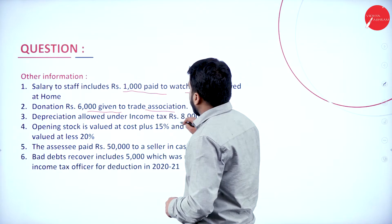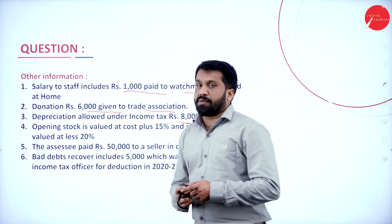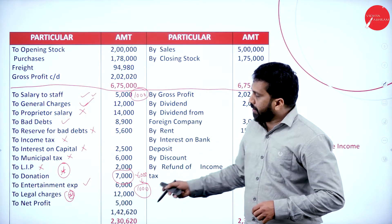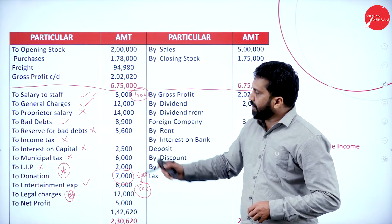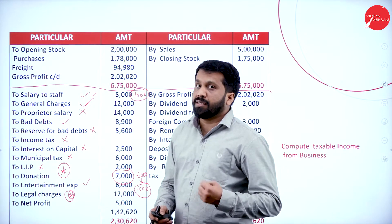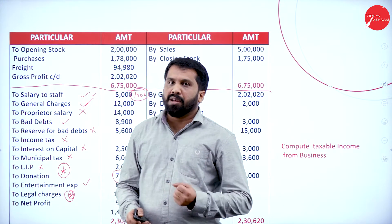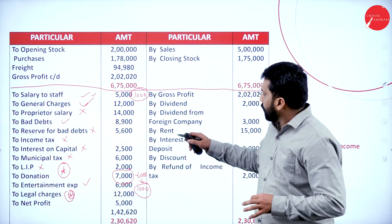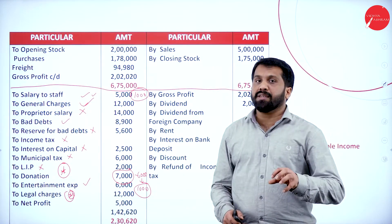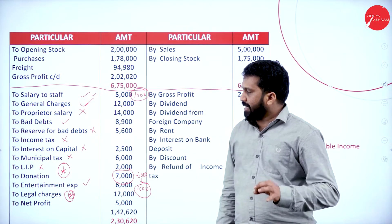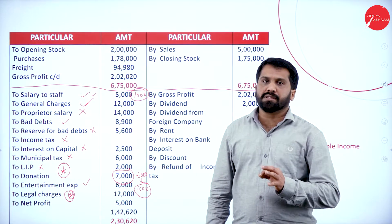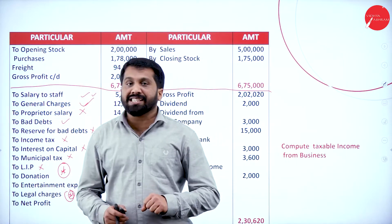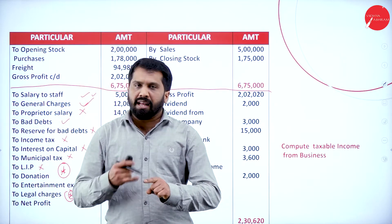Depreciation allowed under the Income Tax Act: whatever depreciation appears in the problem accounts is added back as a disallowed item. Whatever depreciation is given in the adjustment as per Income Tax is deducted as an allowed item. So depreciation from accounts is added, and depreciation as per Income Tax is subtracted.